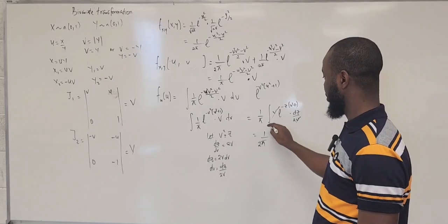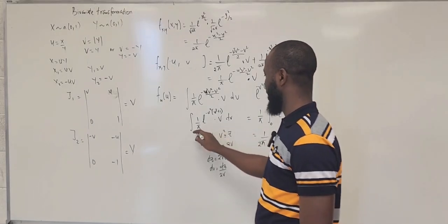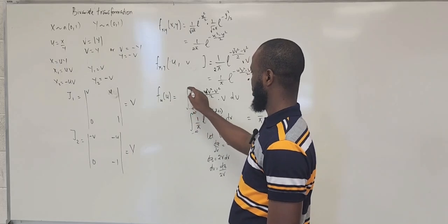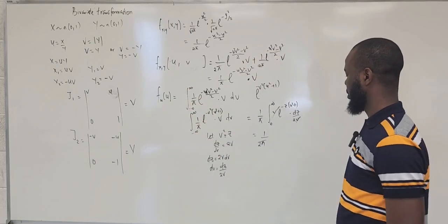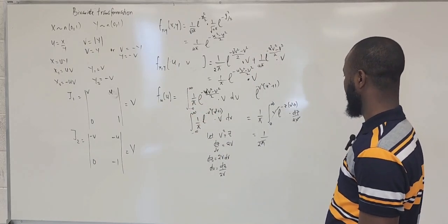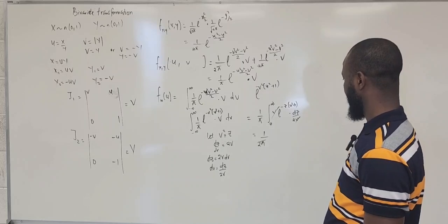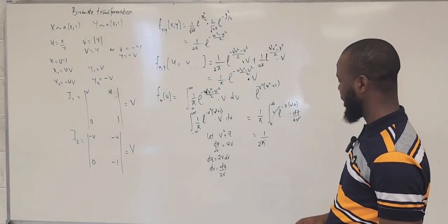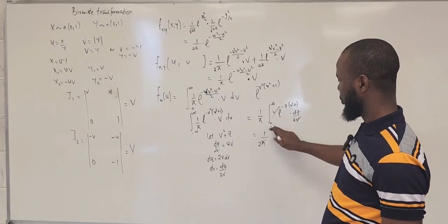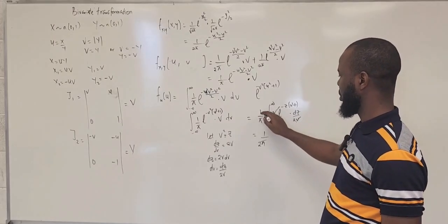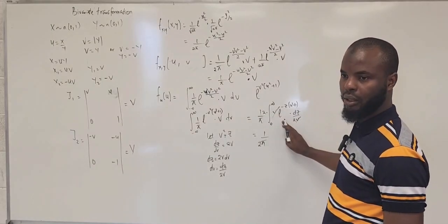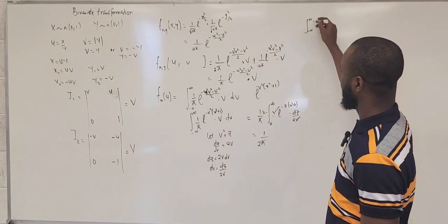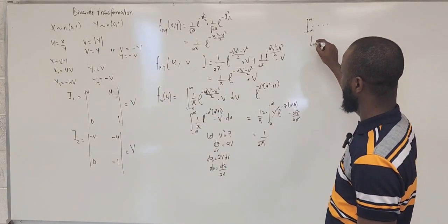This is going to be from zero to infinity, since the original range was negative infinity to positive infinity. But for you to have this as zero to infinity, it should have been two times this. If you want to change this to zero to infinity, you're going to have 2 times this integral. Recall: in standard normal, if your distribution goes from negative infinity, when you change to zero to infinity, you multiply by two.